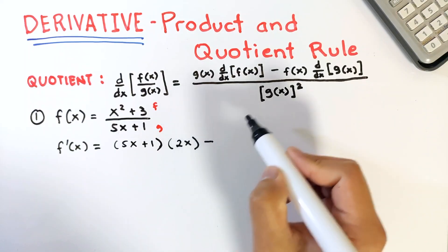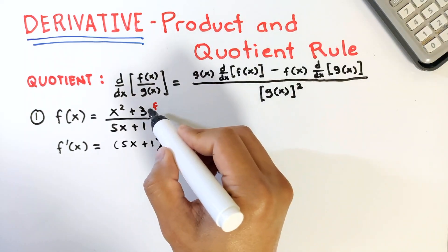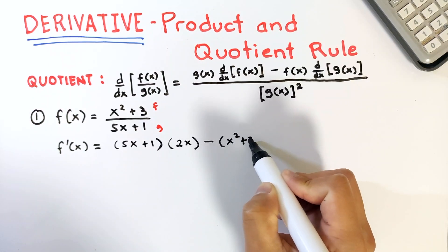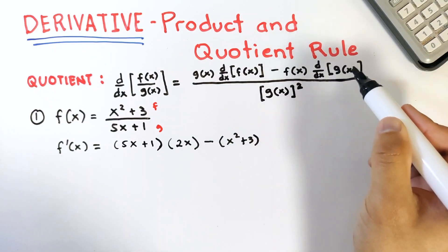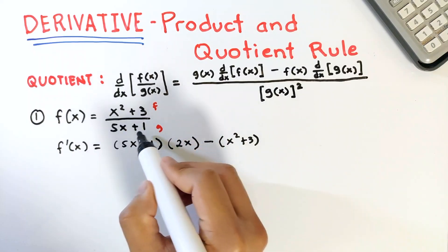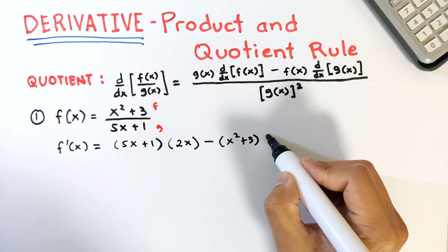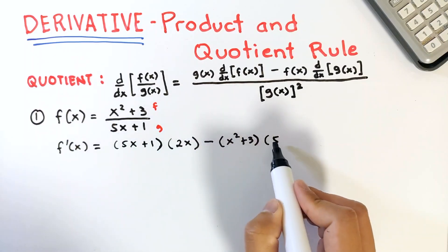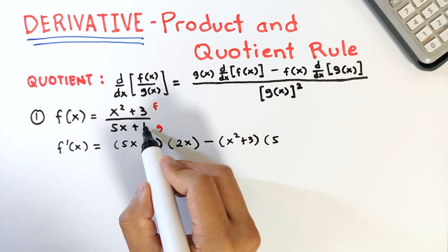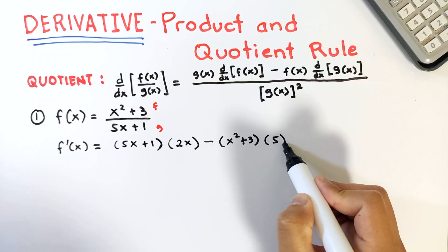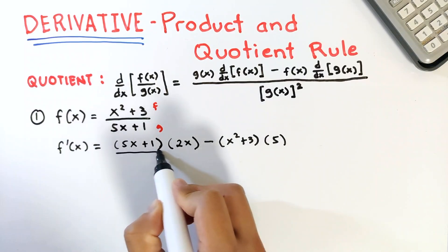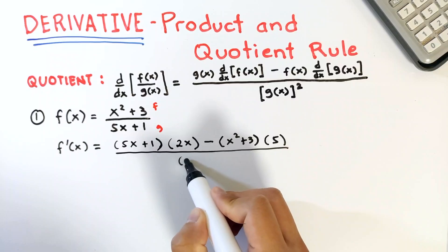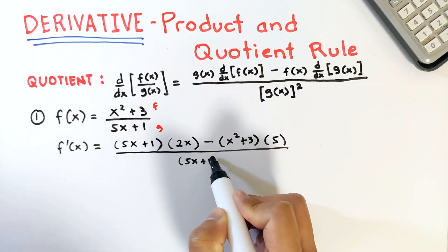Then minus f — copy the numerator — and multiply it to the derivative of the denominator. The derivative of 5x plus 1 is 5: derivative of 5x is 5, and derivative of 1, since this is constant, is 0. So we have 5. Then divided by the square of the denominator: 5x plus 1 squared.